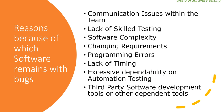The first reason is communication issues within the team. Others include lack of skill testing, software complexity, changing or volatile requirements, programming errors, lack of timing, excessive dependability on automation testing, and third-party software development tools or other dependent tools. These are some of the reasons because of which software has bugs, though there are many other reasons as well.